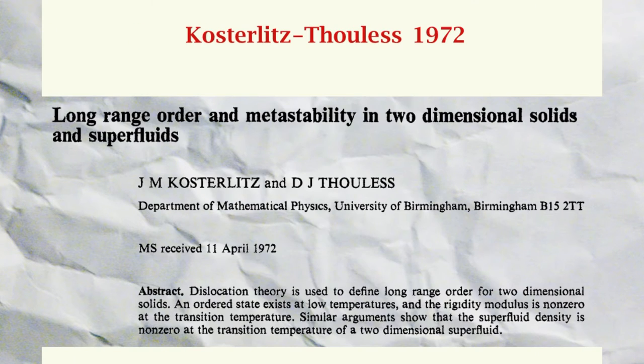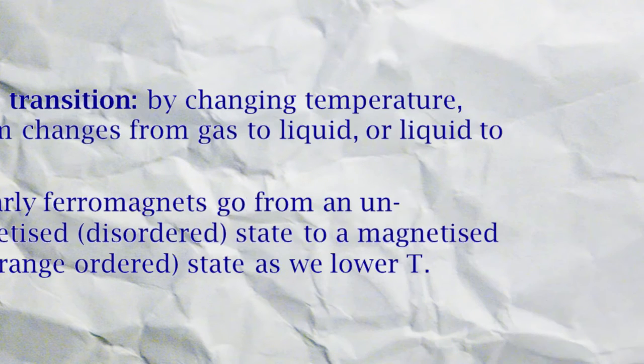I will briefly talk about the Kosterlitz-Thouless work of 1972. This is a short and a long paper about long-range order and metastability in two-dimensional solids and superfluids. What they do here is to consider various different theoretical model systems and talk about the kind of phase transitions one can and cannot have in such systems.